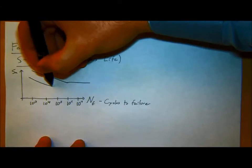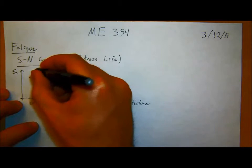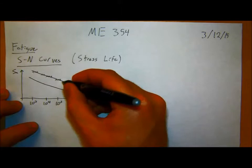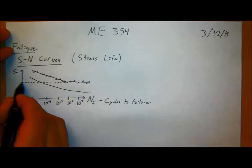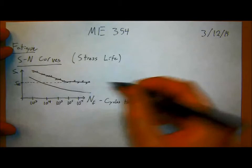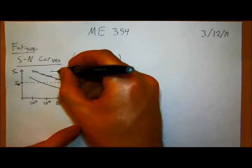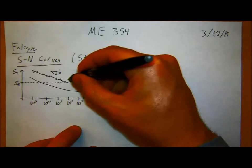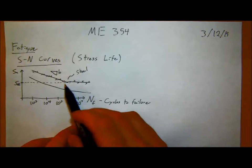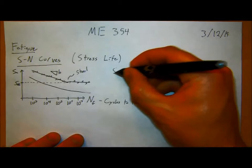There are two types of SN curve shapes. One just keeps curving down — you apply different stress amplitudes and wait to see how long it takes the part to fail. For steel, there's a gradual decrease with a slope b, and that slope b is roughly negative 0.1 for most materials.